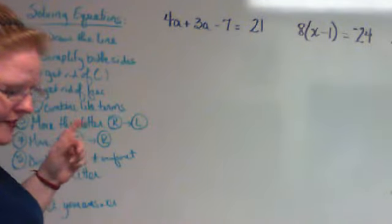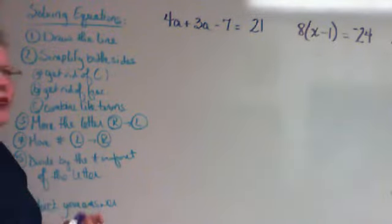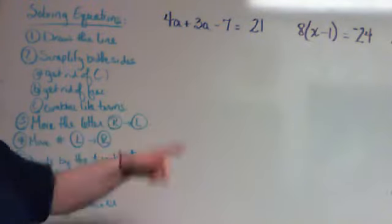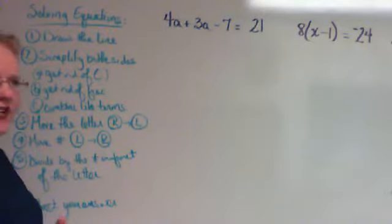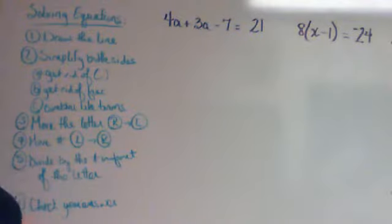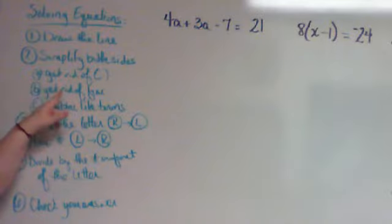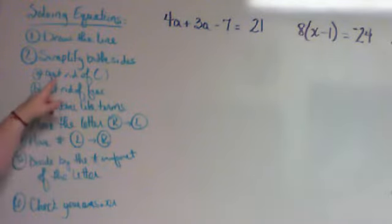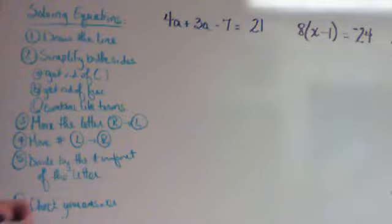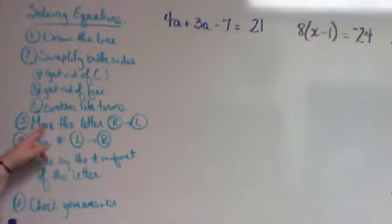Let me talk to you about the steps for solving equations. You always need to draw the line, and it's getting more important especially on smaller problems. Simplify both sides: get rid of parentheses before you try to get rid of fractions, combine like terms. To get rid of parentheses use the distributive property, to get rid of fractions multiply by a common denominator on both sides.